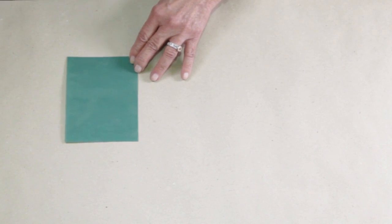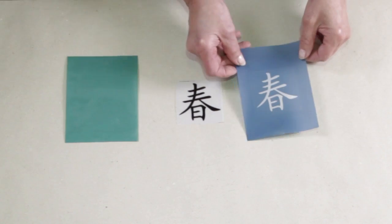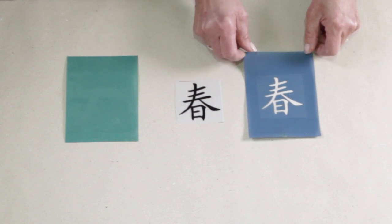To transfer your image to the screen, you expose the screen together with the image to UV light. The process will be shown in a later section of this video.